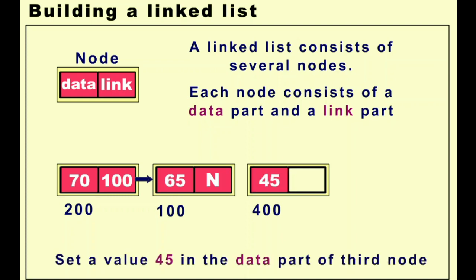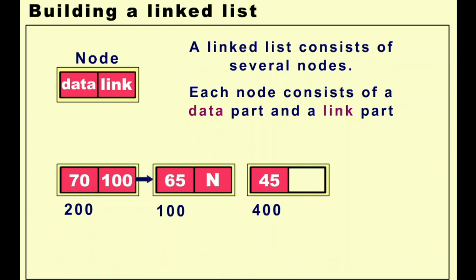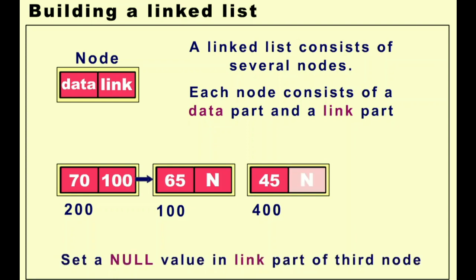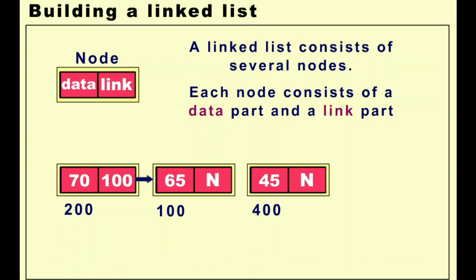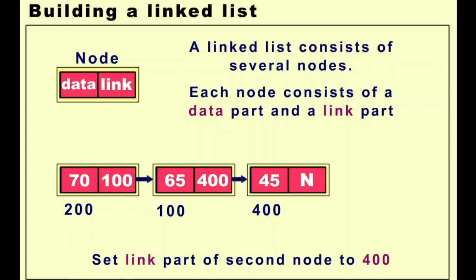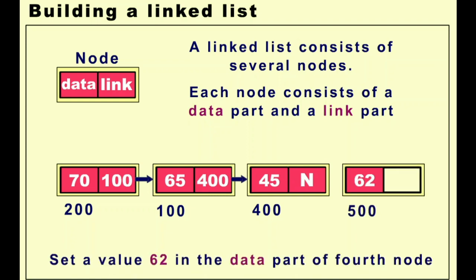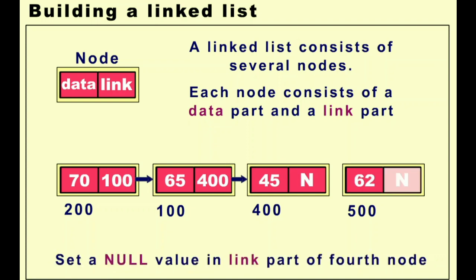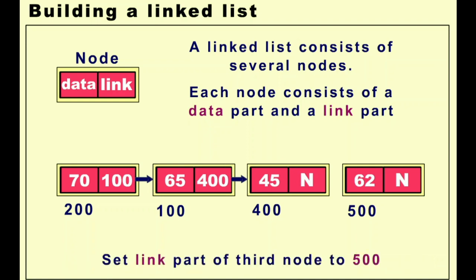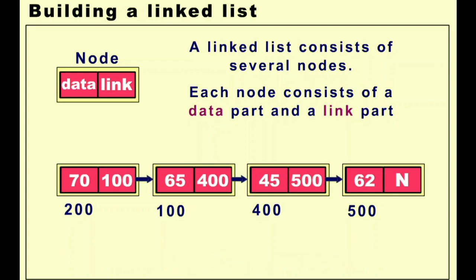We create a third node at memory location 400 with value 45 and null in its link part. Then on the second node we add 400, which is the address of the third node. Next, we create a fourth node at memory location 500 with value 62. We replace null in the third node with 500, connecting it to the fourth node. The last node has a null value.